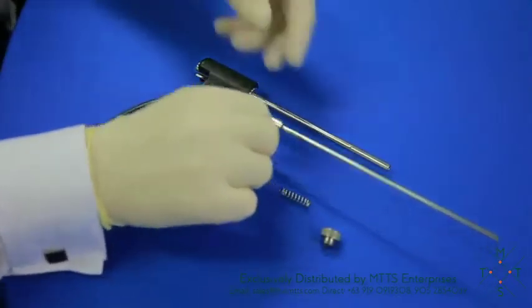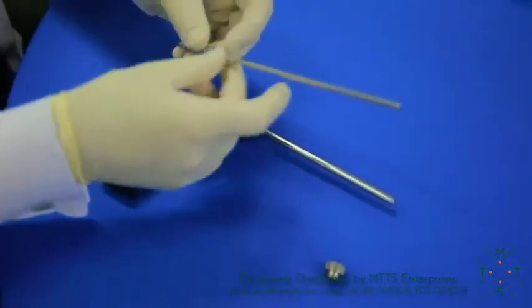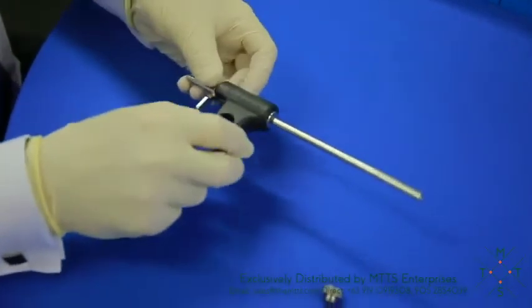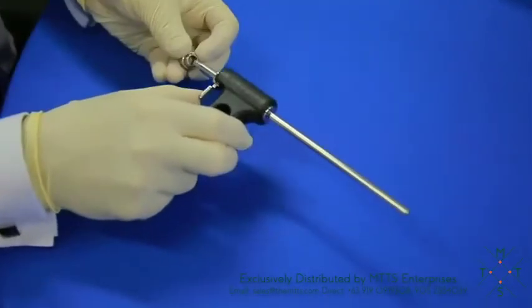To assemble the handpiece, you simply place the spring onto the blade striking piston and place into the outer housing and screw on the rear lock nut.